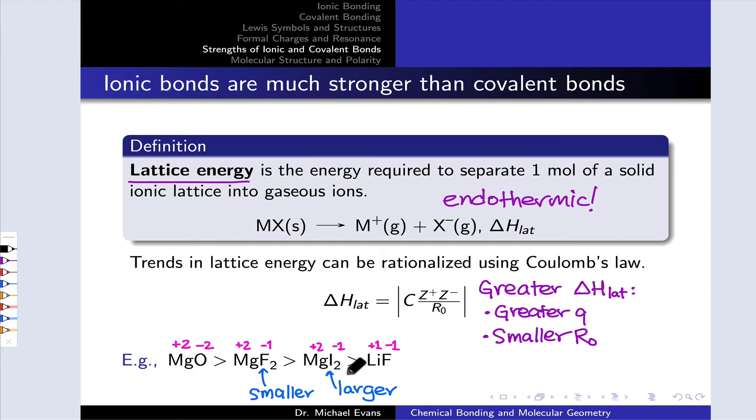And this means that the R₀ value in MgF₂, this distance between the ionic centers, is much smaller than it is in MgI₂. And because that's in the denominator, MgF₂ will have the larger or more endothermic lattice energy. So here we're using this second point, the correlation of R₀ with lattice energy, to rationalize the difference between MgF₂ and MgI₂.